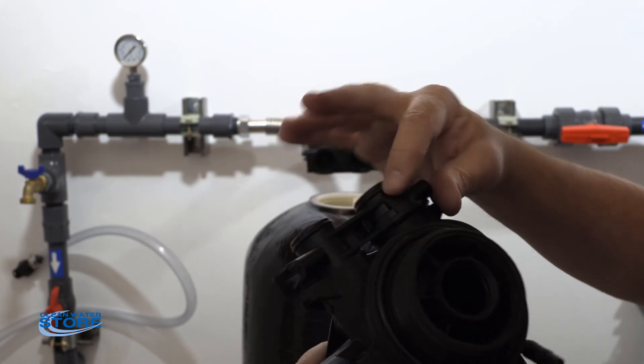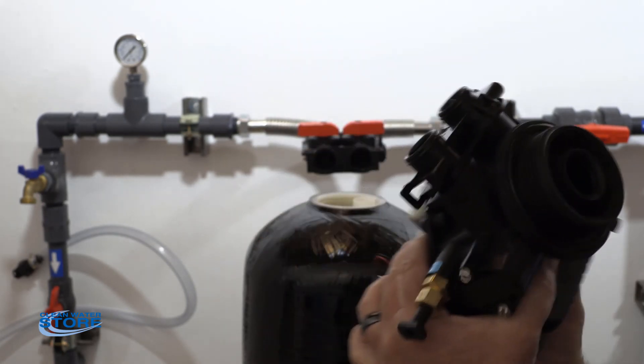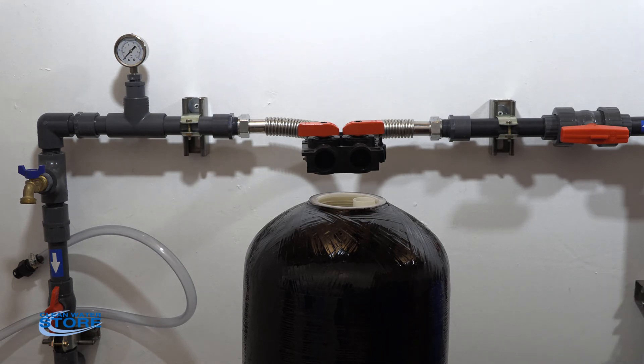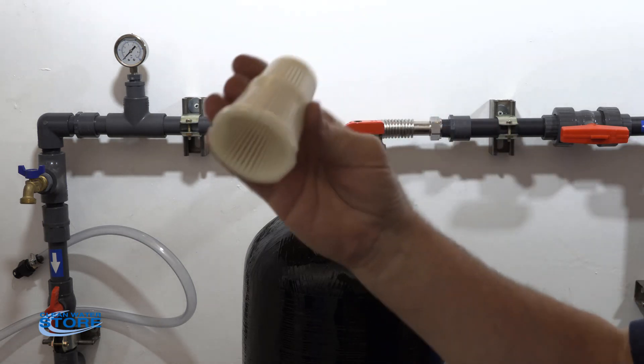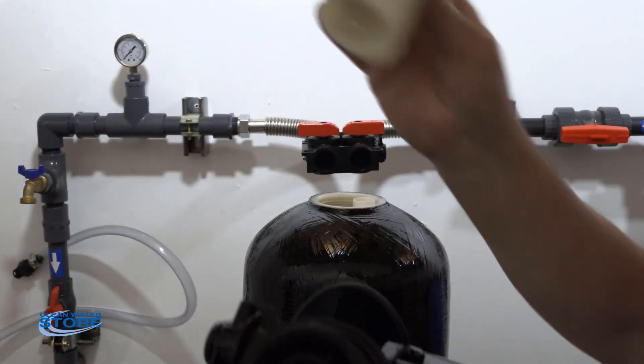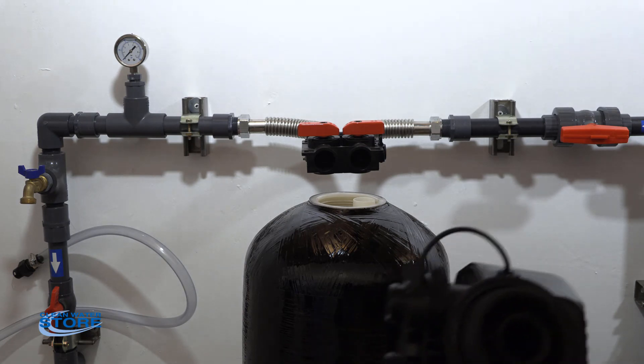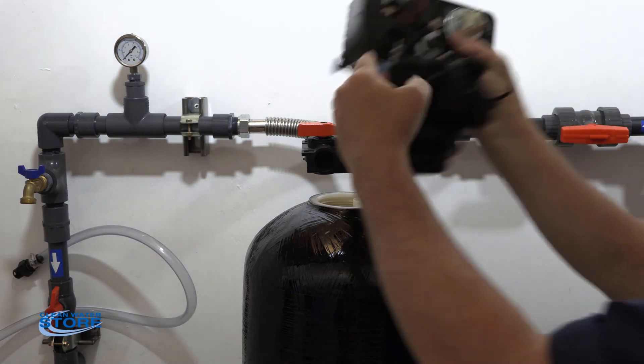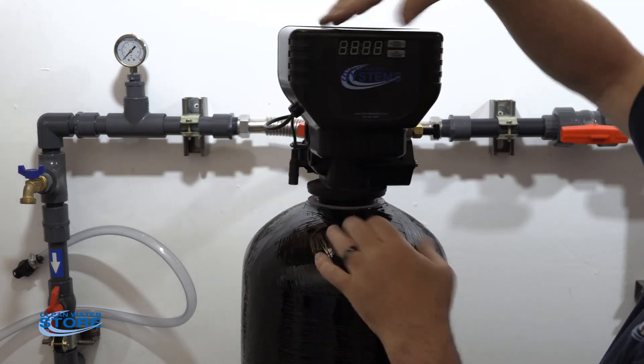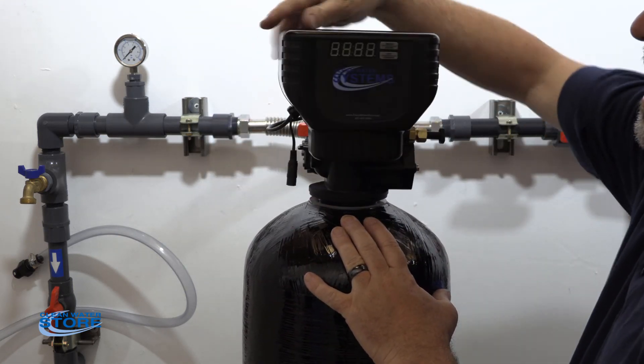And again, if you have a ProOx or Chemisorb, you're going to have this top filter that snaps in there. In this case, we don't have it, but in some cases you will have that. Okay, we'll go ahead and get that D-tube seated and thread this on.